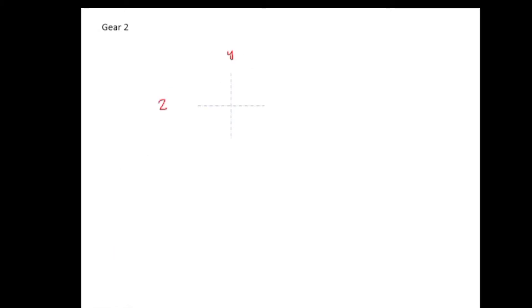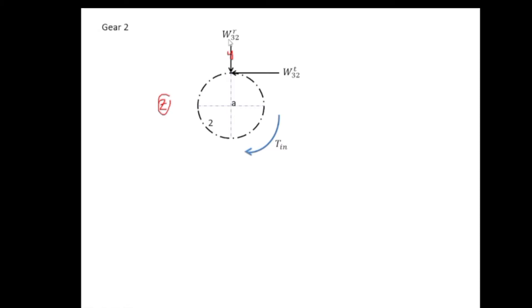Let's draw the free body diagram of gear two, with the y-axis and the z-axis (out of the page). Shaft A carries gear two with an input torque. The force exerted by gear three on gear two in the tangential direction — in positive z — is represented as w32t, and the radial component in the y-direction is represented as w32r. Because of these forces, there are equal and opposite reaction forces on the shaft: fr2t (in z) and fr2r (in y).